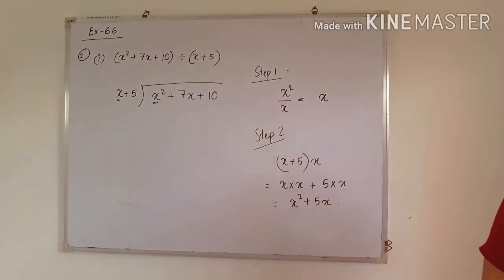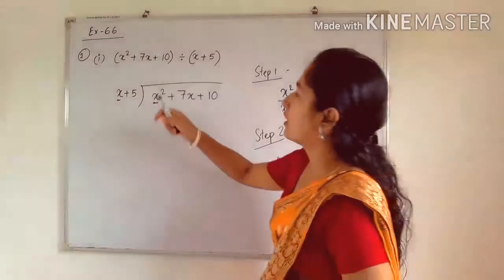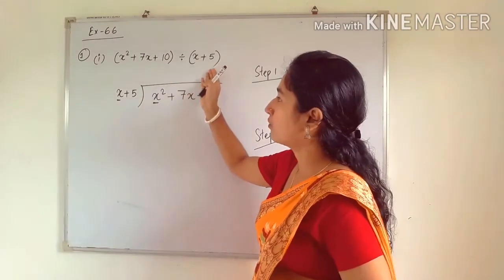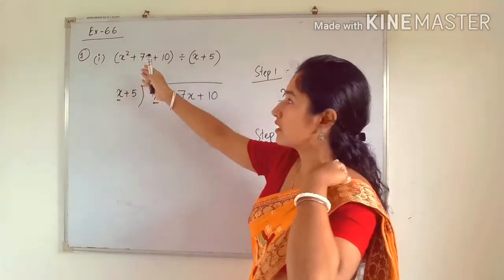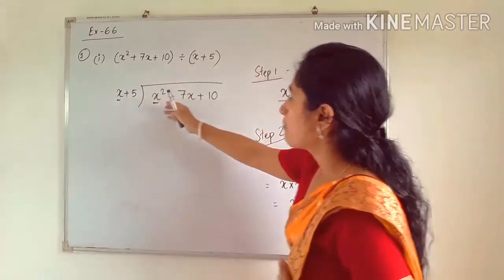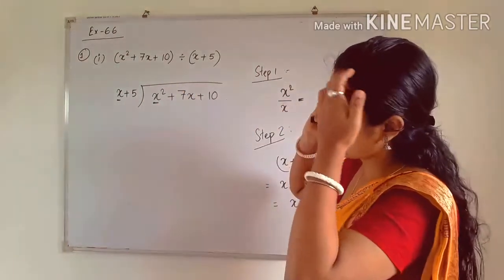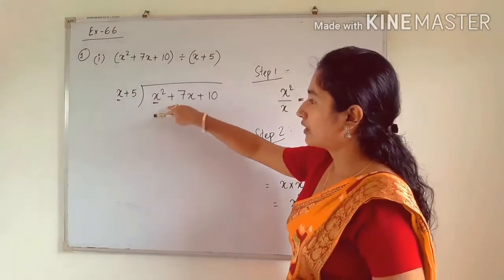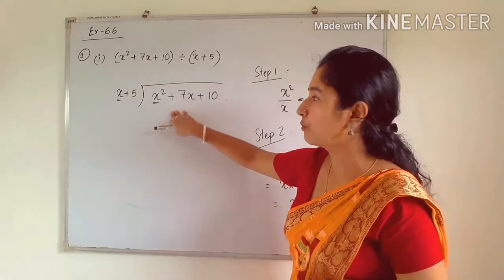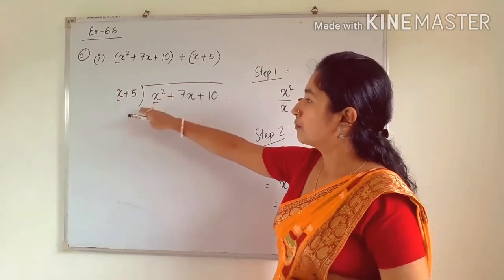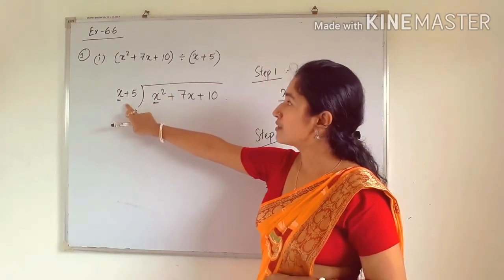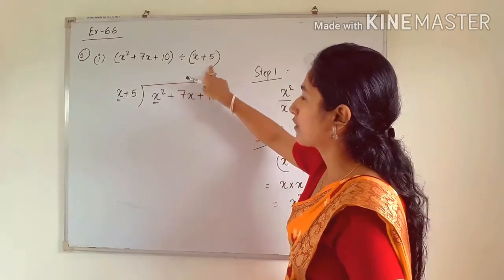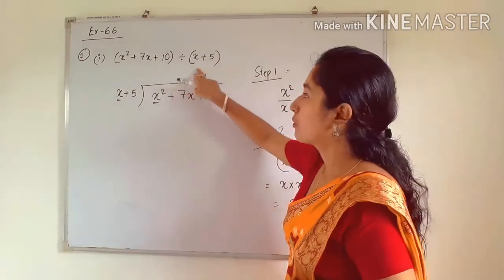Here we have to simplify. The first question is x² + 7x + 10 divided by (x + 5). This is a trinomial because it has 3 terms, and we have to divide it by (x + 5). In the place of the dividend you write the polynomial, and in the place of the divisor we write (x + 5), which is our denominator.